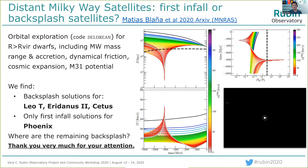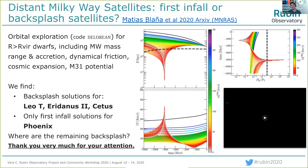We also did ram pressure studies and found that some of these dwarfs could survive ram pressure. For Phoenix, we found only first-infall solutions because it's already falling in too fast — you would need a Milky Way of double the mass. We also included N-body simulations to test our orbits, and because these are low-density environments, there were no strong effects. Hopefully in the future we can discover more of these backsplash systems with LSST, and maybe learn more about the accretion history of the local group. Thank you very much.